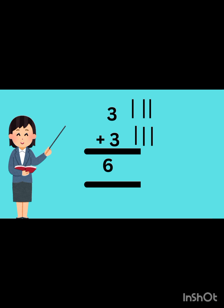Now draw four lines in front of four and three lines in front of three: one, two, three, four, five, six, seven. It's seven. Count all together.